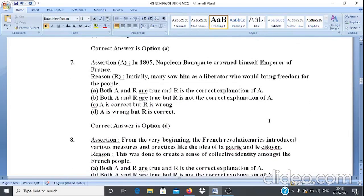Question 7. Assertion A: In 1805 Napoleon Bonaparte crowned himself emperor of France. Reason R: Initially many saw him as a liberator who would bring freedom for the people. Here assertion is wrong and reason is correct. That is why correct answer is option D.